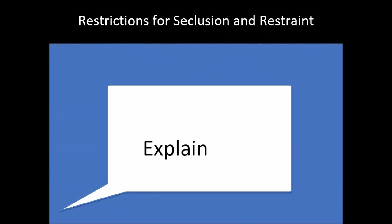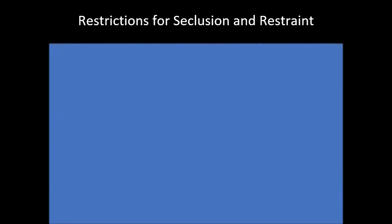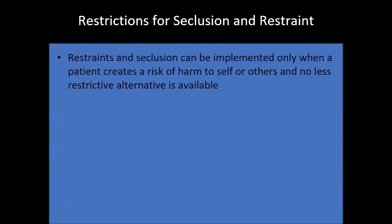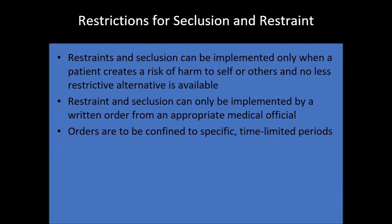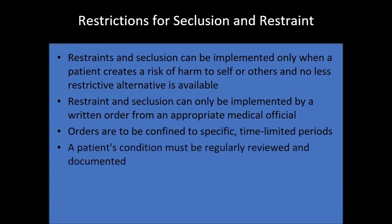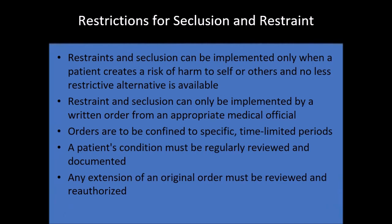Regarding restrictions for seclusion and restraint: they can be implemented only when the patient creates a risk of harm to themselves or others and there is no less restrictive alternative. Restraint and seclusion can only be implemented with a written order from a medical official. Orders should be specific and time-limited — they should not be written as needed. A patient's condition must be regularly reviewed and documented, and any extension of the original order must be reviewed and reauthorized.